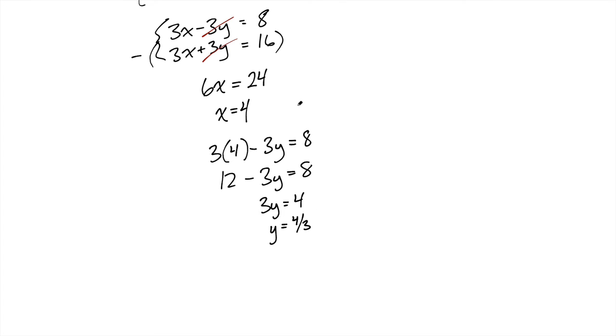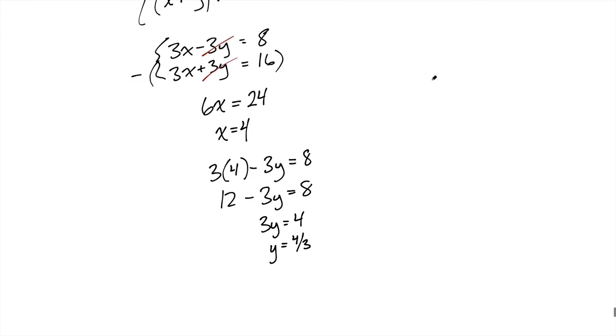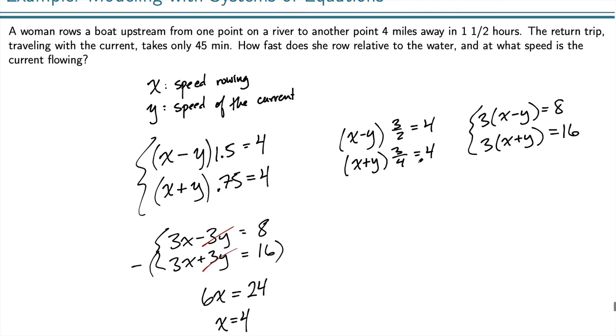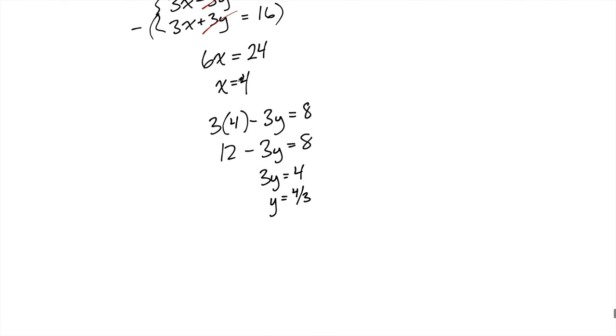Now I have a solution to the system of equations, but I need to interpret that in the context of the problem. x is the speed that she's rowing and y is the speed of the current. We were using hours and miles, so she is rowing 4 miles per hour. And the current is traveling at four thirds miles per hour, 1.3 miles per hour.